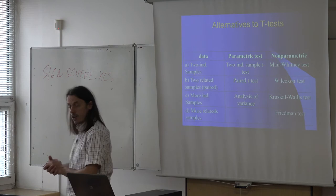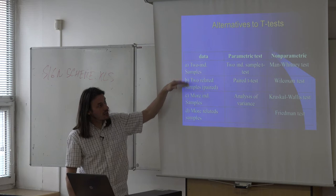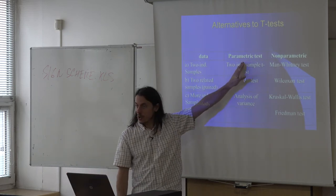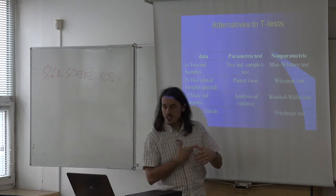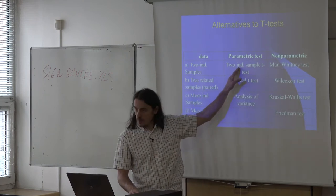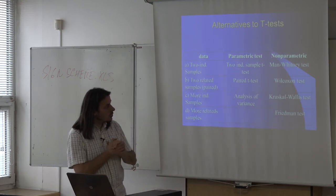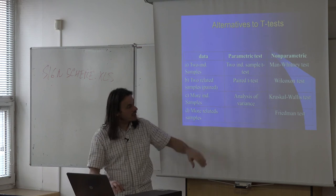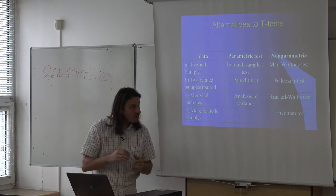Here is the table of alternatives to classical parametric tests for individual data designs. If you have an ordinal variable or a low number of respondents, use the Mann-Whitney test instead of the two independent samples t-test. If you have more than two groups, don't use analysis of variance for ordinal data or small samples — use the Kruskal-Wallis test instead.